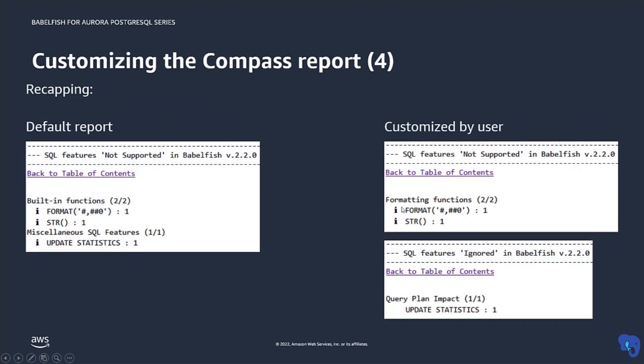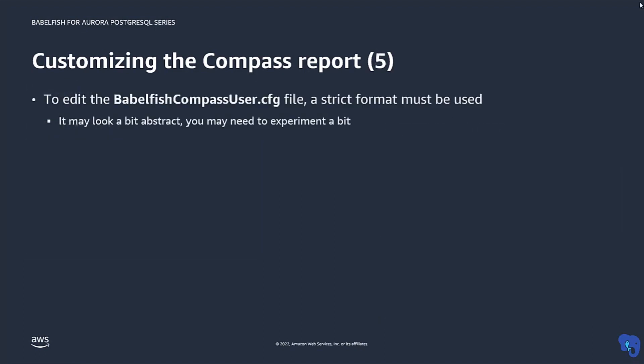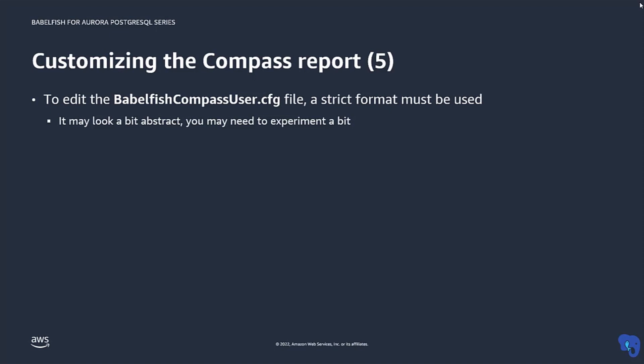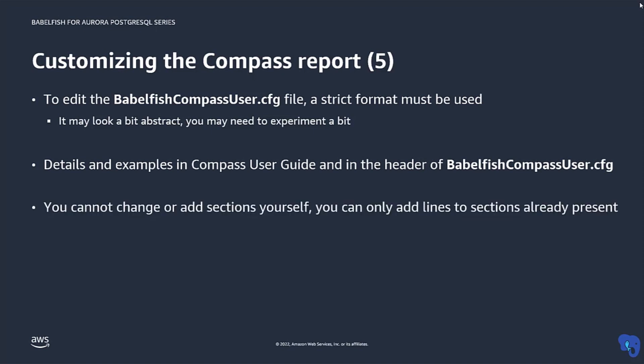To recap, on the left-hand side you see the original Compass report, and on the right-hand side you see the report with those customizations. The format to edit the BabelfishCompassUser.cfg file is a bit abstract. Both the Compass User Guide as well as the header of the BabelfishCompassUser.cfg file contain various examples that should get you started. Please note that you cannot change the section headers in the file or add any section headers yourself; you can only add lines to the sections that are already in the file.